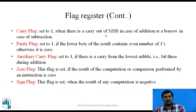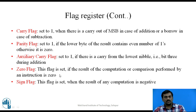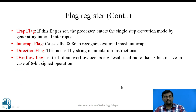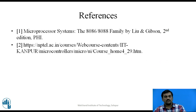The Carry Flag is set to 1 when there is a carry out of the MSB in addition, or a borrow in subtraction. The Parity Flag is set to 1 if the lower byte of the result contains an even number of ones; otherwise it is zero. The Auxiliary Carry Flag is set to 1 if there is a carry from the lowest nibble (bit 3) during addition or subtraction. The Zero Flag is set to 1 if the result of a computation or comparison is zero. The Sign Flag is set to 1 if the result of any computation is negative. The Overflow Flag is set to 1 if overflow occurs — that is, if the result exceeds 7 bits for 8-bit signed operations or 15 bits for 16-bit signed operations.